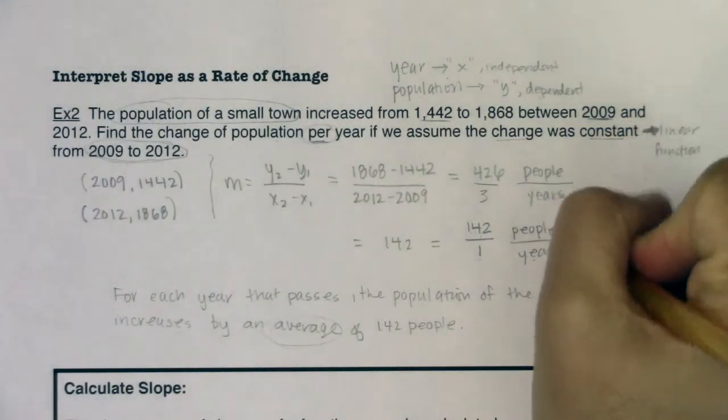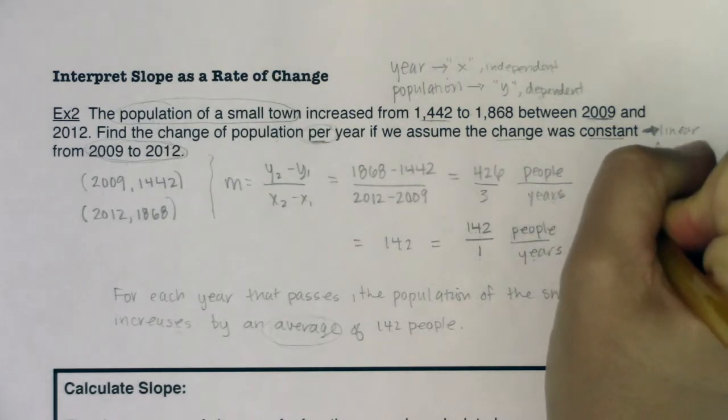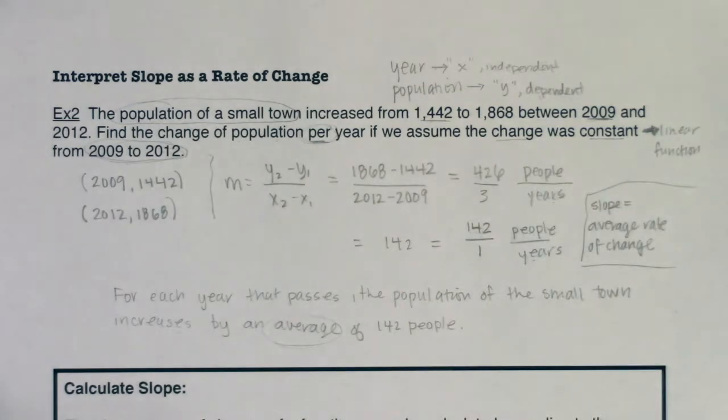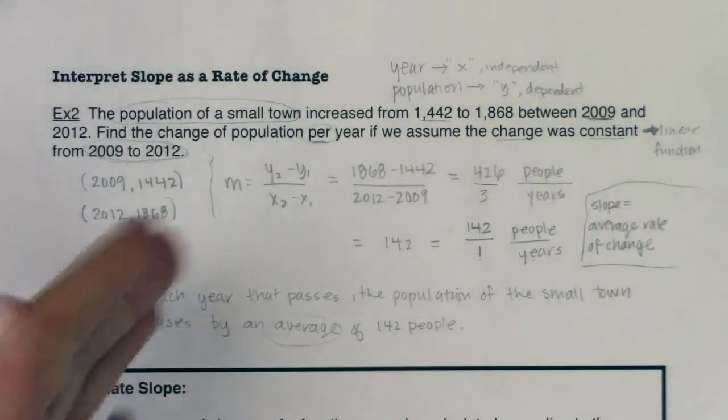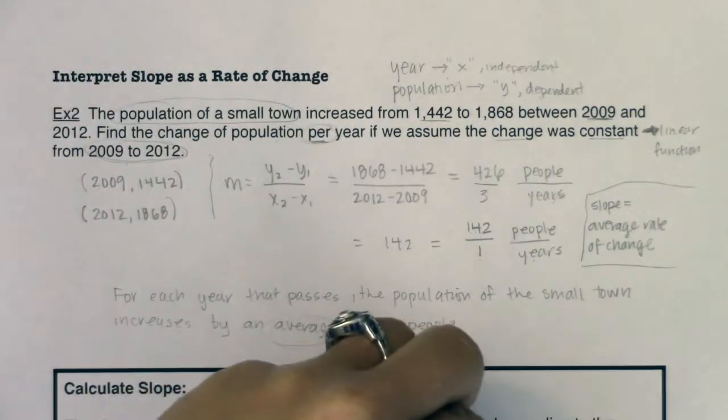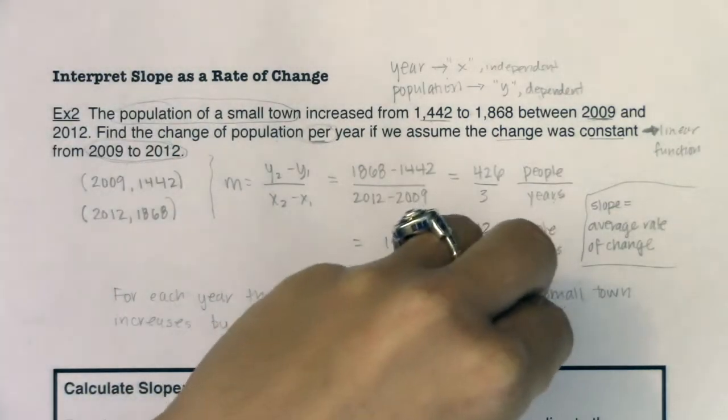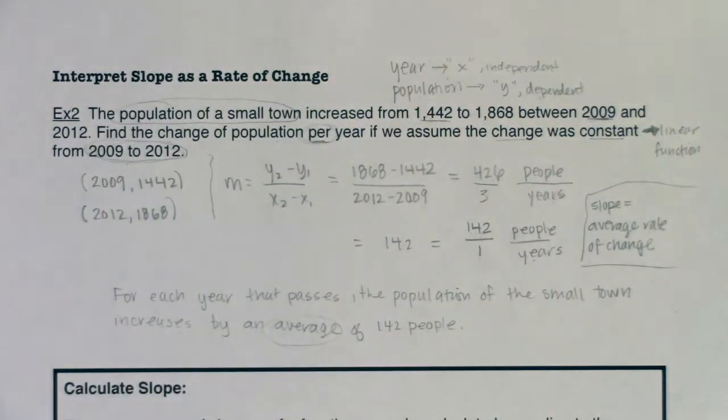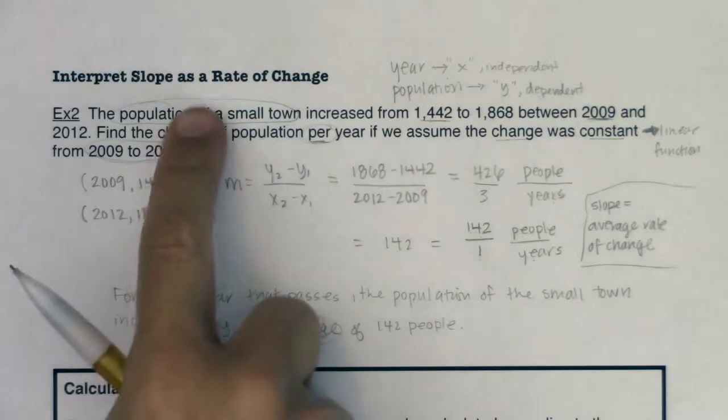So again, it doesn't mean that every year exactly 142 people showed up. Maybe one year it was 150, and the other year it was 136, and then it was 141, but it averaged out to 142 people per year. So there's our first look at writing a slope or interpreting your slope as a rate of change, putting it into a sentence.